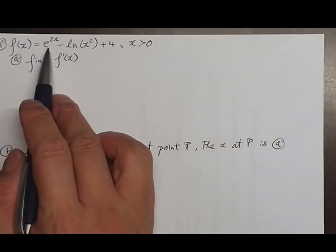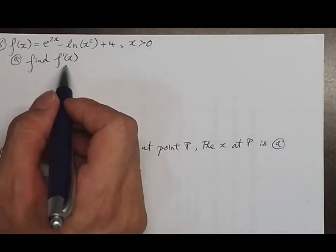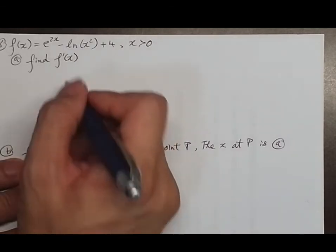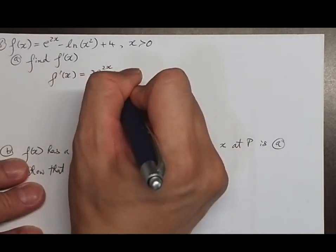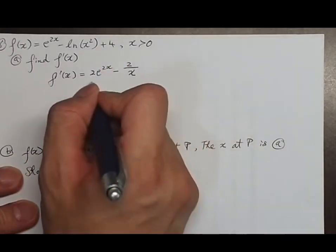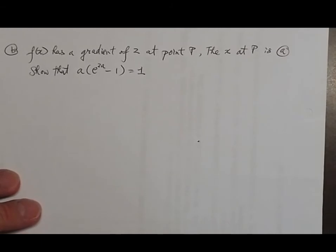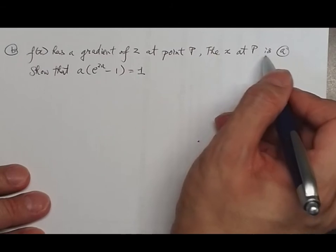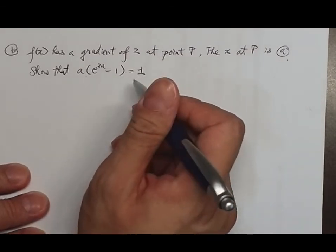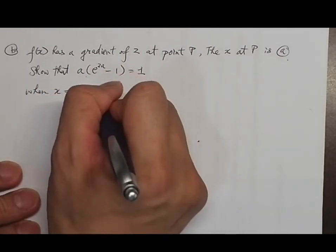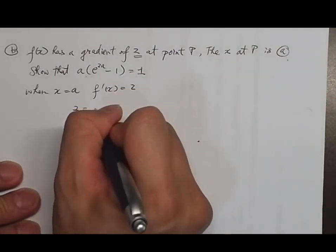Question 6: function f(x) equals e to the 2x minus log x squared plus 4, where x is greater than 0. Finding the derivative: f'(x) equals 2e to the 2x minus 2/x. Part b: f(x) has a gradient of 2 at point P where x equals a, so f'(a) equals 2.